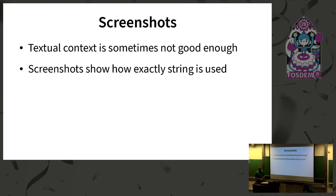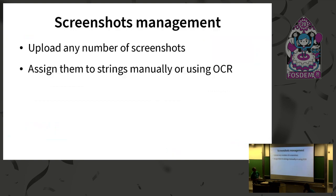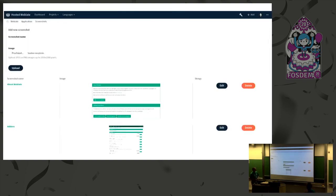Providing text context is nice, but sometimes it takes too long to write for all strings. For mobile applications it's really helpful to also provide screenshots so translators can see what's on the screen and how all the strings fit together. Weblate can upload screenshots shown in the source information, and you can link all the strings to a screenshot. You can upload any number of screenshots and assign them to strings — this can also be done automatically using OCR so you just confirm the matches. There's a screenshot management interface to handle all of this.